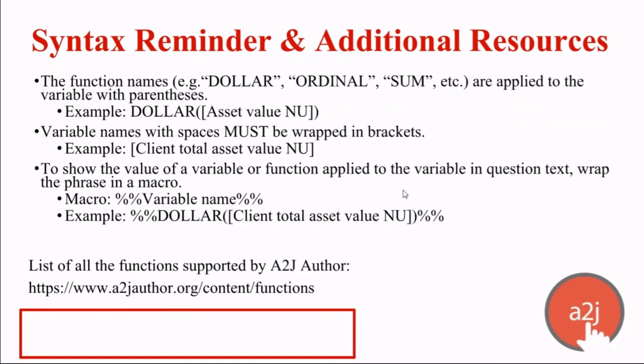Responding to a question about sum: sum is not new — it works the same way it did in A to J 4, where you also used the sum function to total all values held by a repeat variable. If you don't use sum to set a new total-expense variable, what gets passed in the repeat variable is expense 1, expense 2, expense 3 — they remain as separate line items and don't get added up.